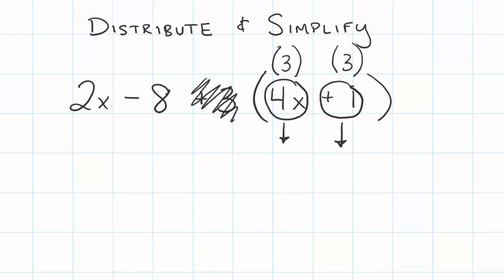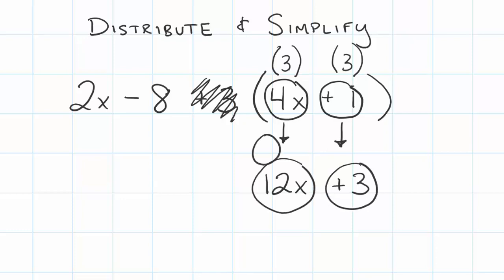4 times 3 is 12. We still have our x attached to the 4. This is 4 x's and we want 3 sets of 4x so it's gonna give us a total of 12x. 3 times 1 is gonna give us positive 3. There's our two new terms and I'm gonna circle them right away and say that 12x is positive and so is the 3.